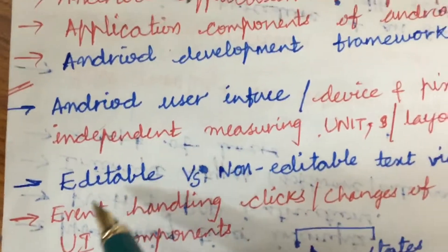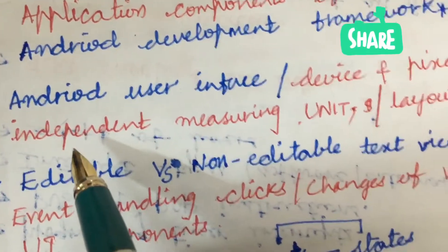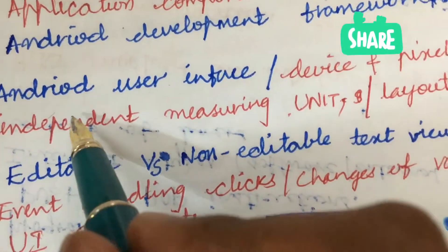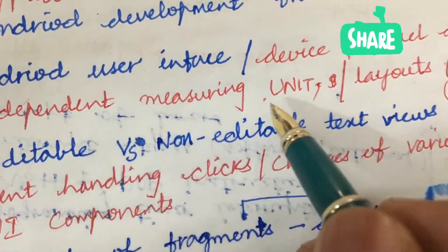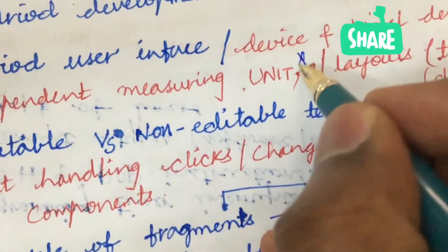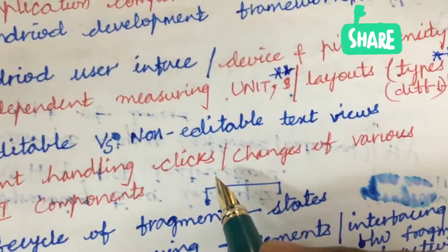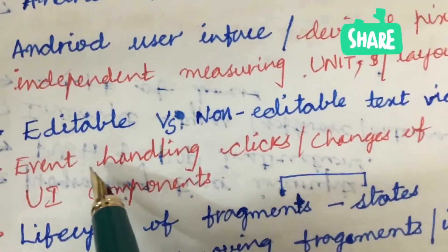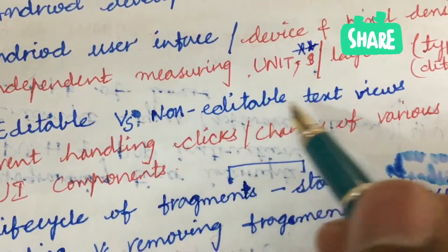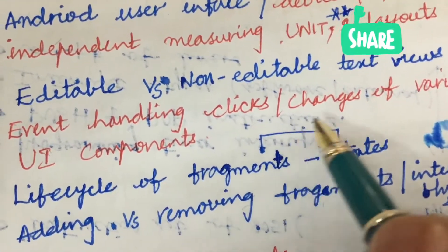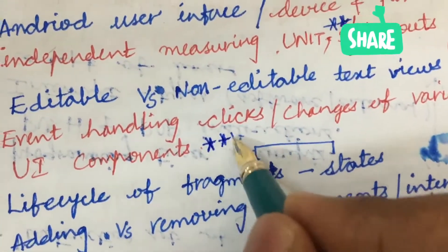Unit 2 is also very large in its structure, so please do work out each and every parameter I highlight here. Android user interfaces, devices and pixel density independent measuring units are one of the gunshot questions we can expect. The different types of layouts and the differences among those layouts are also important. Later, the differences between editable and non-editable text views, handling clicks, and the different changes of various UI components may also be one of the gunshot questions.